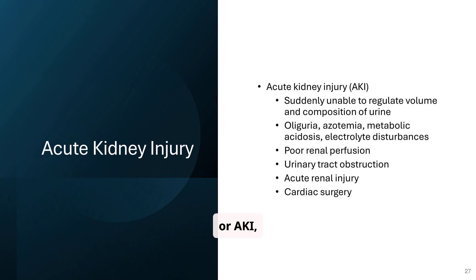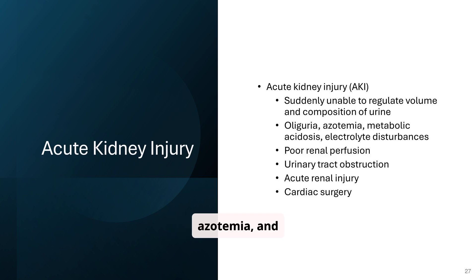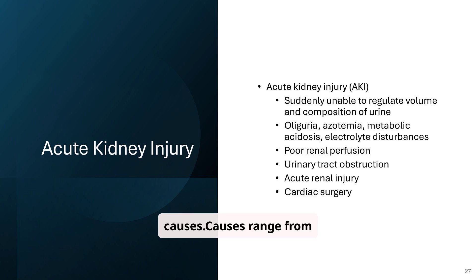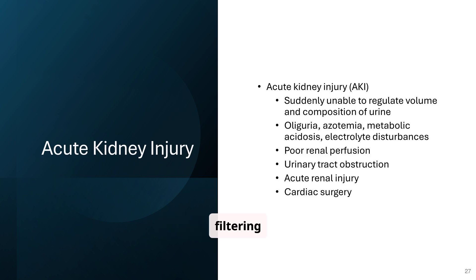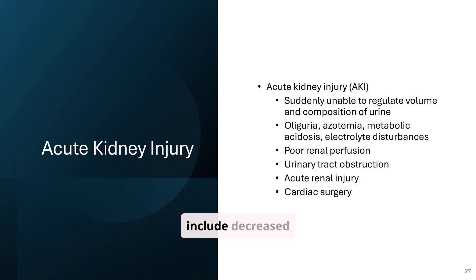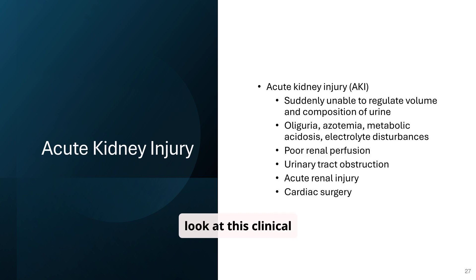Acute kidney injury, or AKI, involves a sudden inability to regulate urine volume and composition. Oliguria, azotemia, and electrolyte disturbances are common. Poor renal perfusion and urinary tract obstruction are frequent causes. The kidneys stop filtering effectively, leading to buildup of waste, fluid, and electrolyte imbalances. Symptoms include decreased urine, lethargy, and swelling. A clinical example: a teen on NSAIDs for a sports injury who gets dehydrated and develops AKI — a classic setup.